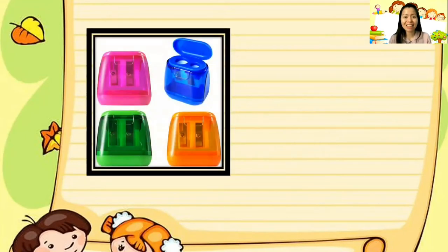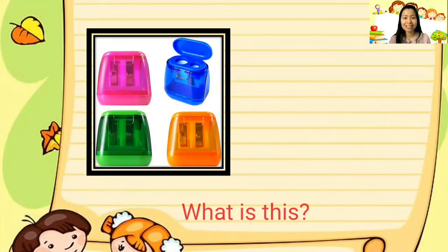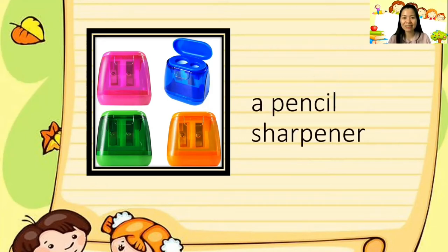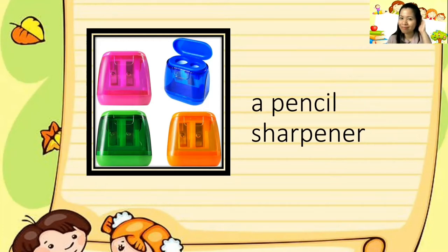We have these colorful things which we use to sharpen our pencils. What is this? It's a pencil sharpener. That is correct. Can you say 'a pencil sharpener'? Say it again: a pencil sharpener.